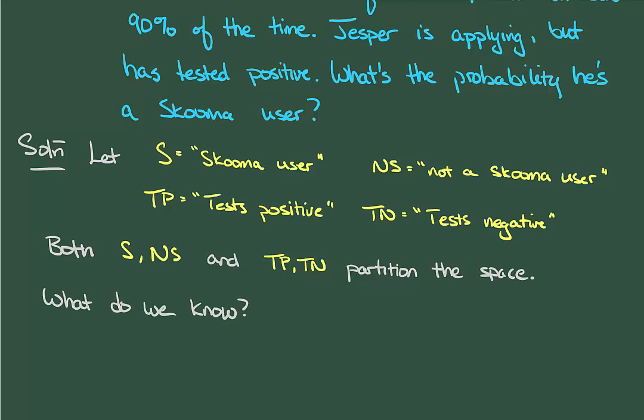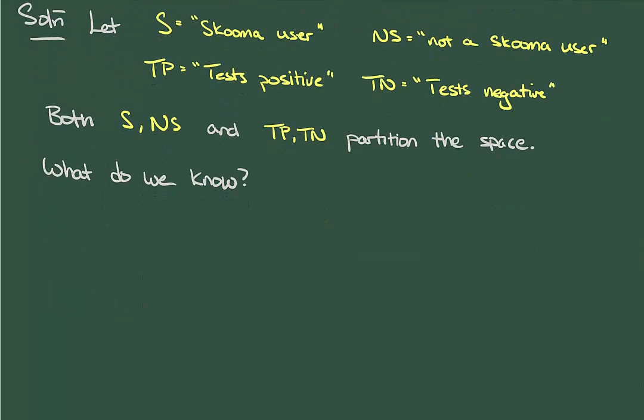With this in hand, what does the problem statement tell us? Well, we know that 5% of the city uses skooma, so in turn 95% must not.